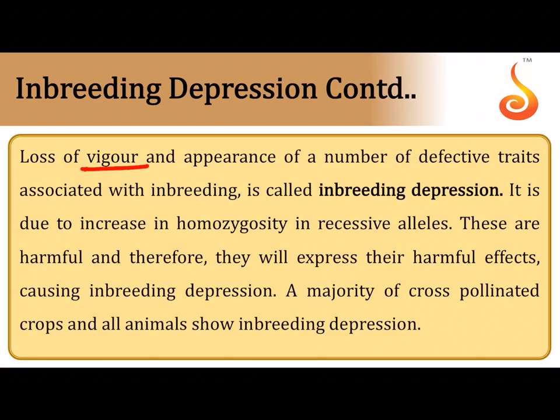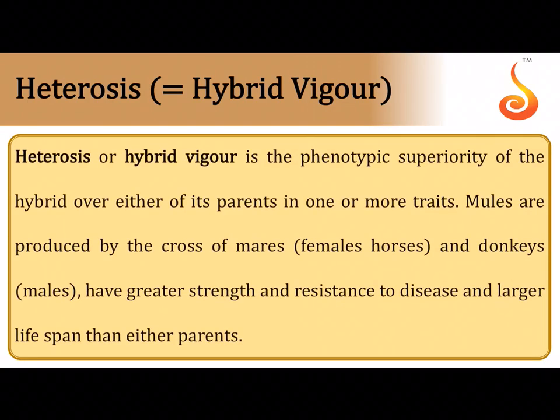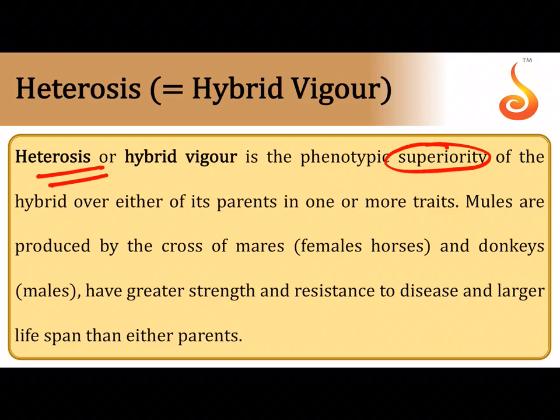To overcome inbreeding depression, an intervarietal or interspecific cross can be performed to reintroduce different alleles from a new species or variety, recreating a mixed population and increasing variety. Hybrid vigor, or heterosis, is where the hybrid is superior to both parents because it combines the superior traits of both the father and the mother. The hybrid is therefore considered superior and this is referred to as hybrid vigor or heterosis.